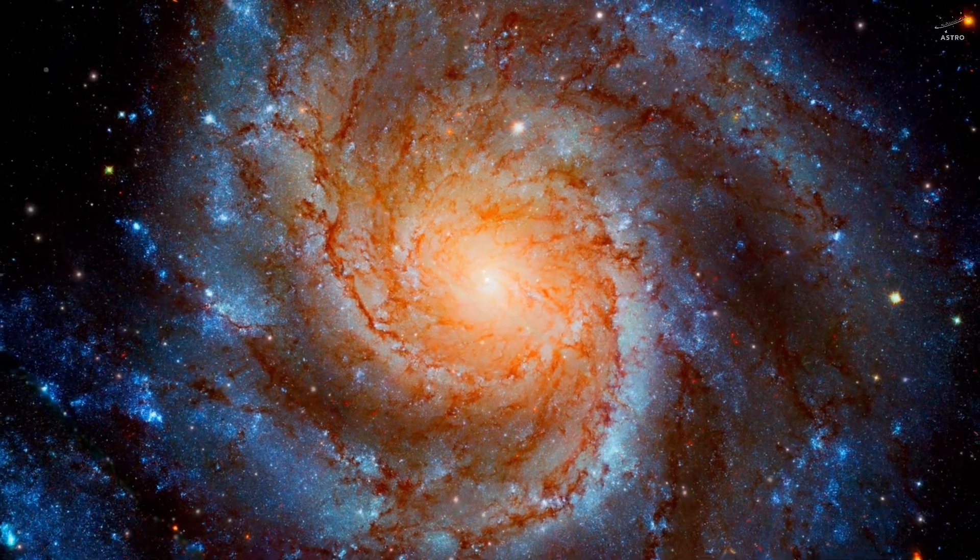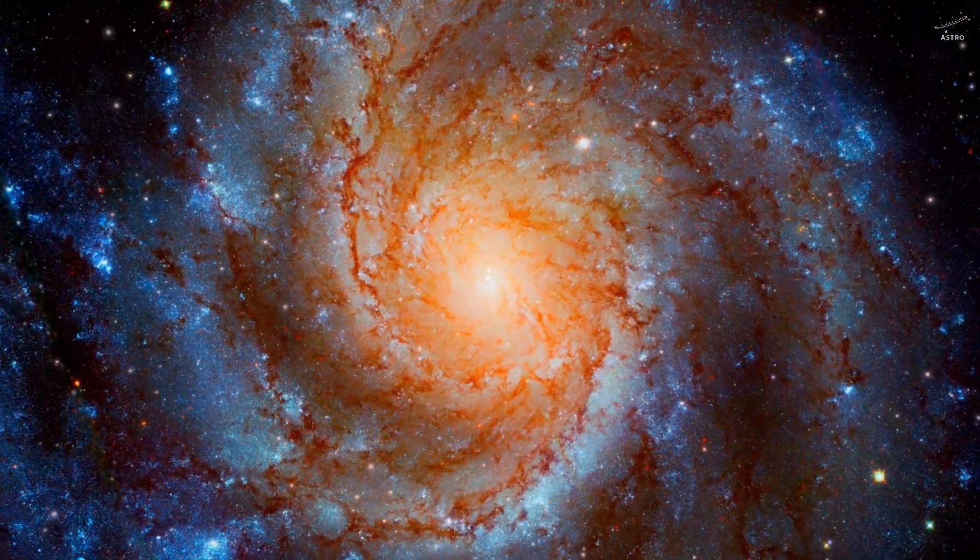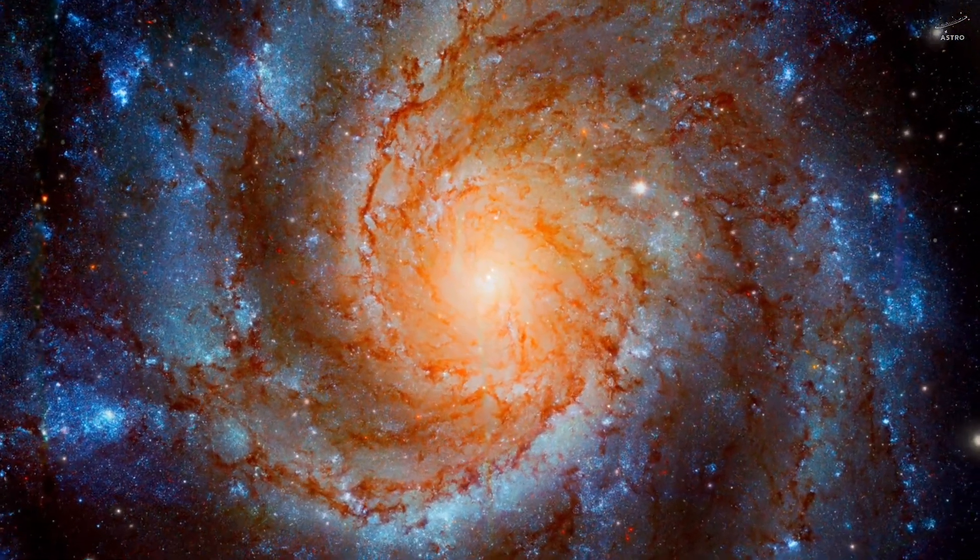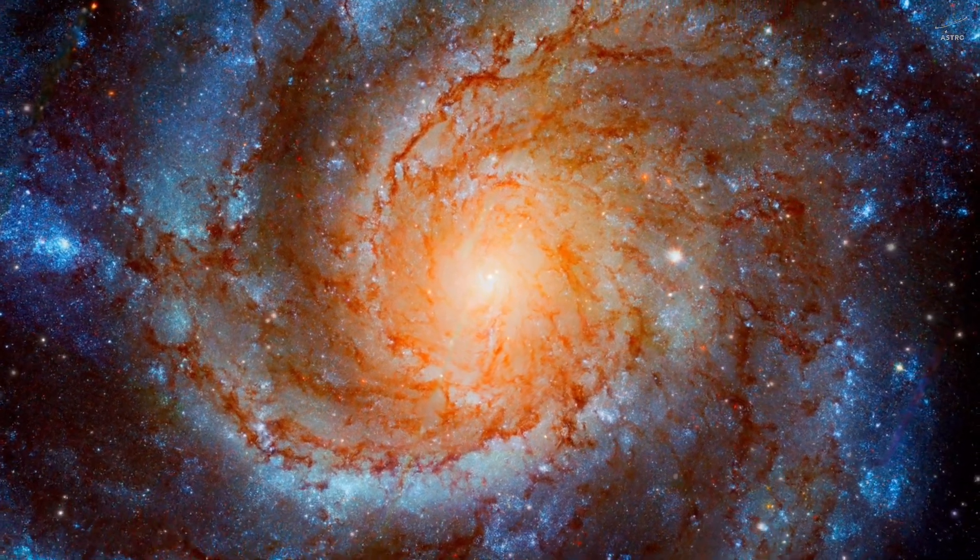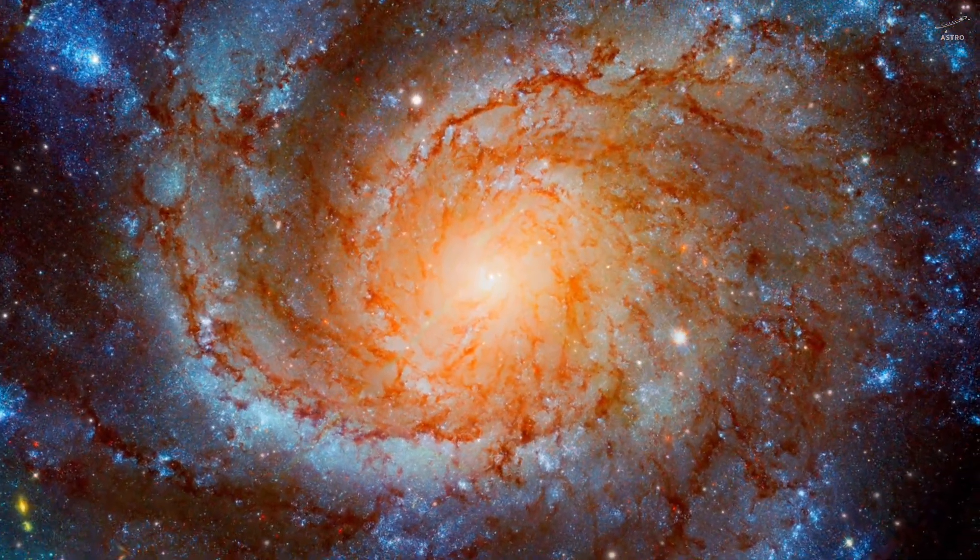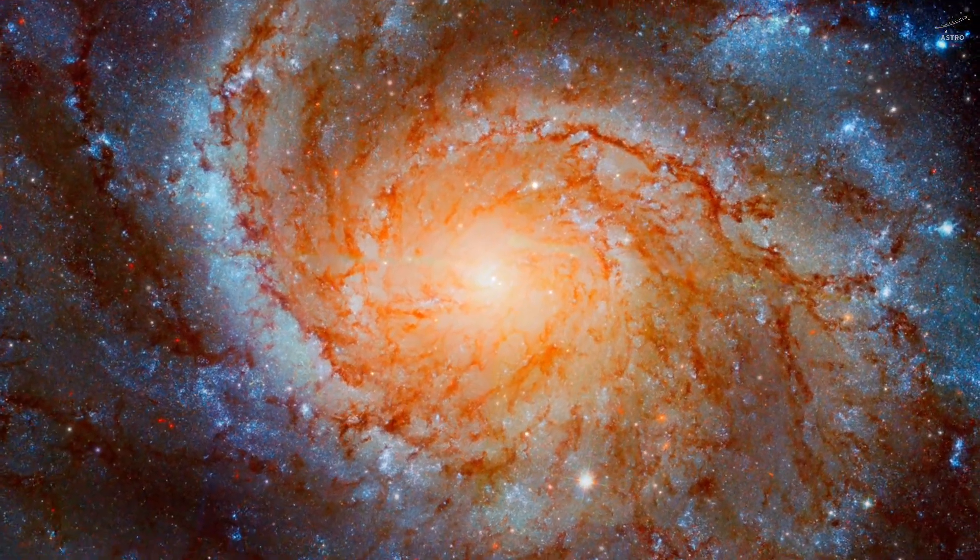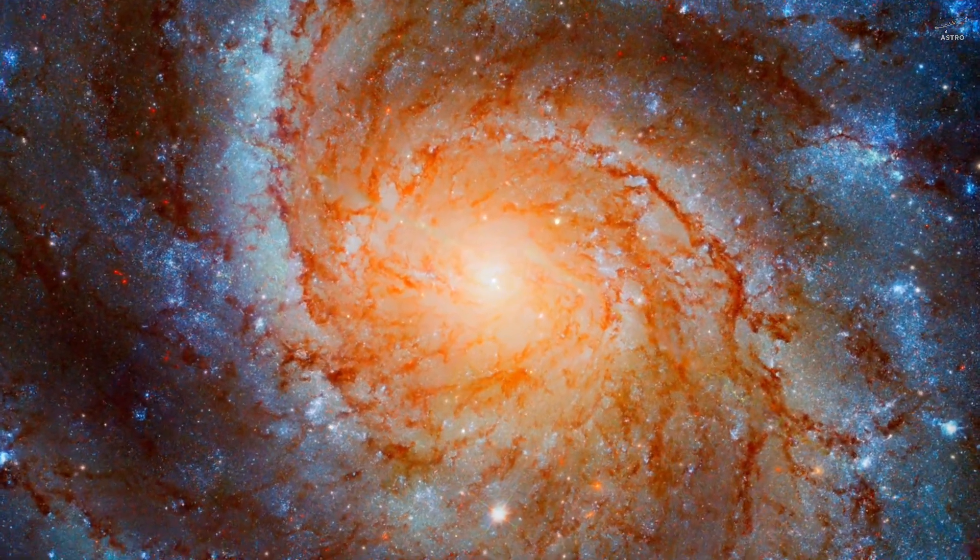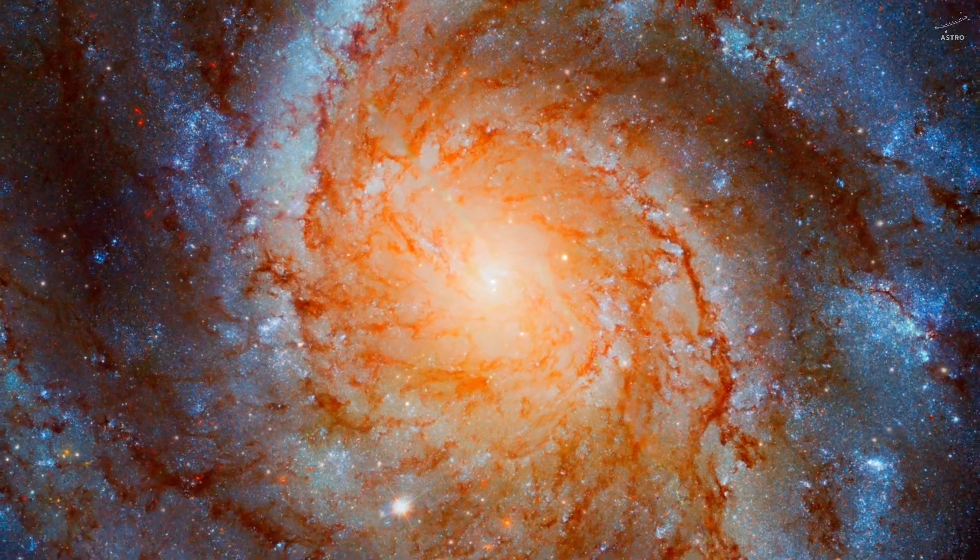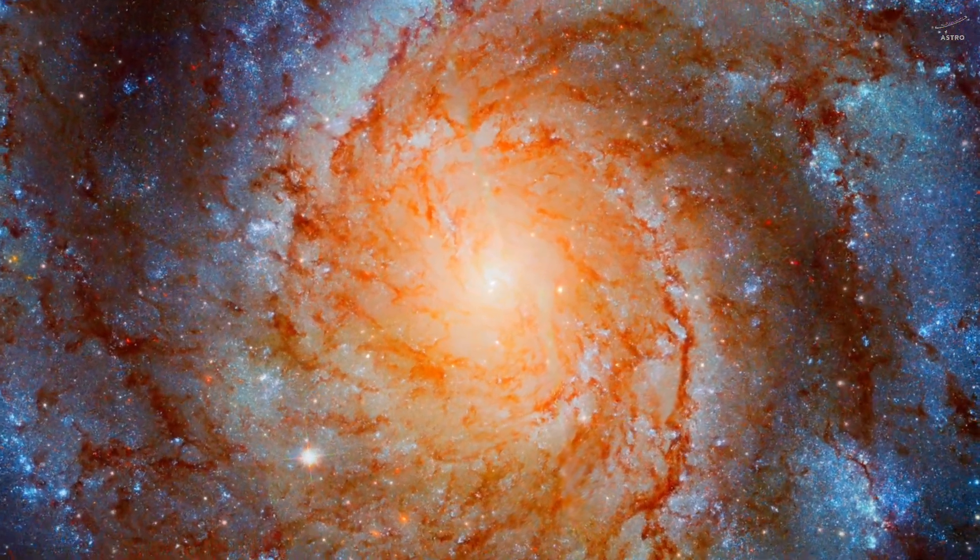But then, our most powerful telescopes began to see something strange. Some galaxies looked perfectly normal - spiral arms, glowing dust, bright cores. But when we zoomed into their centers, there was nothing. No black hole, no anchor, no heart.